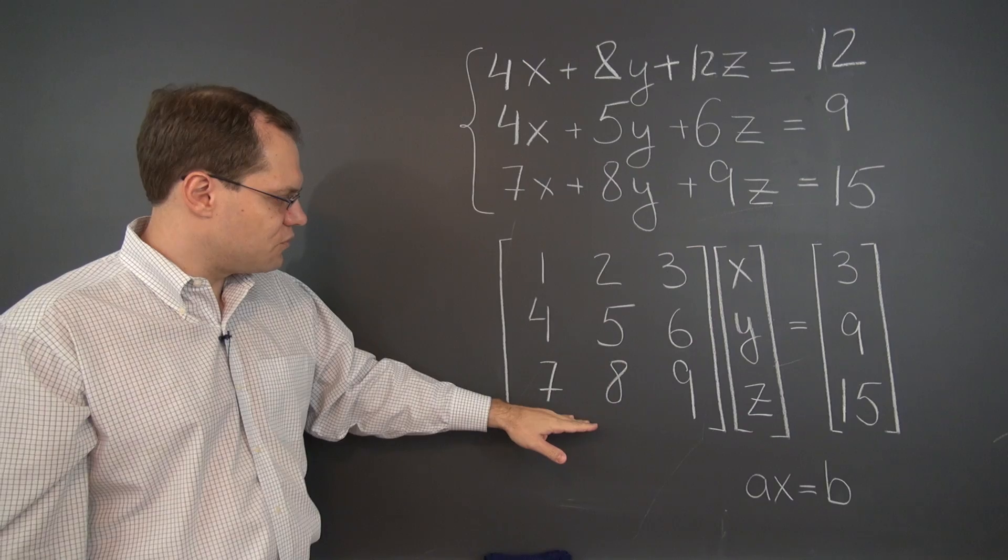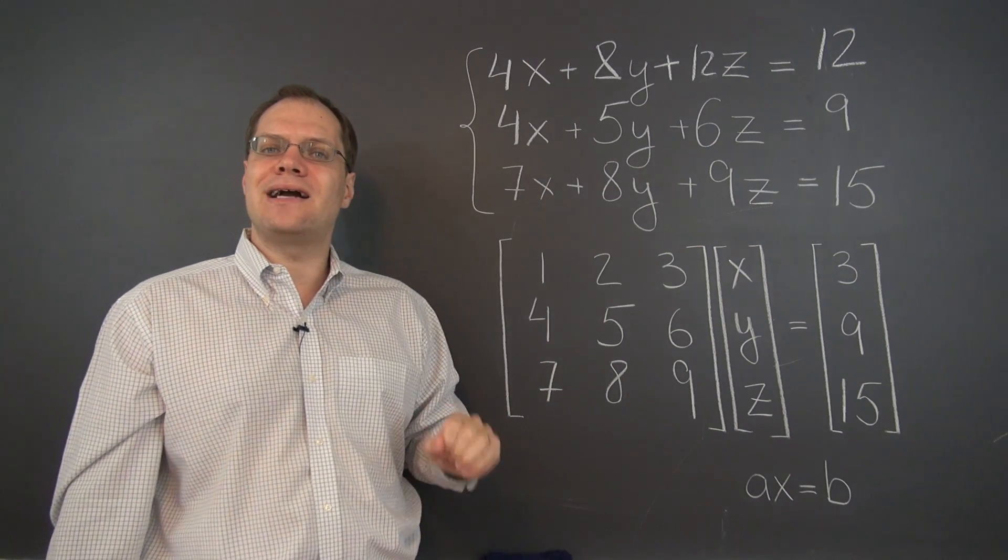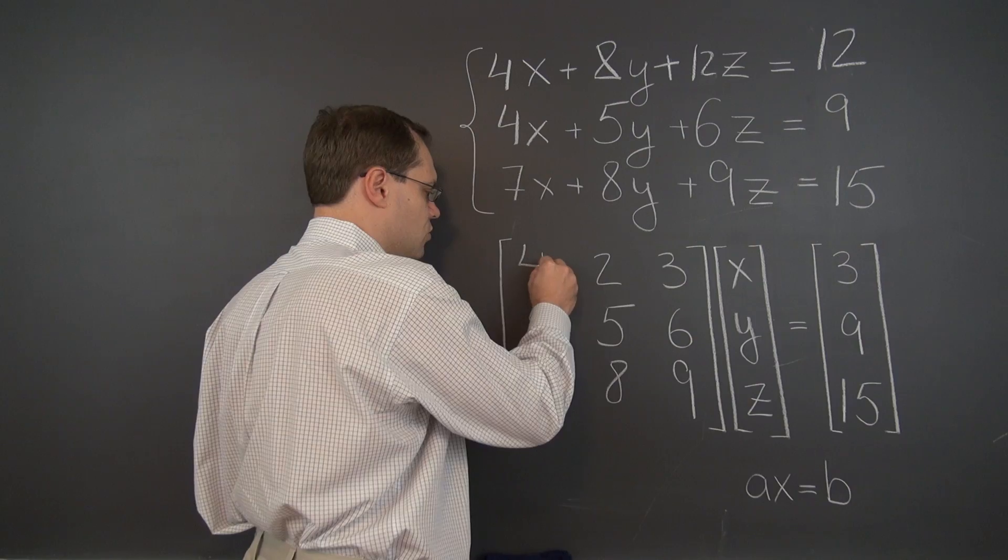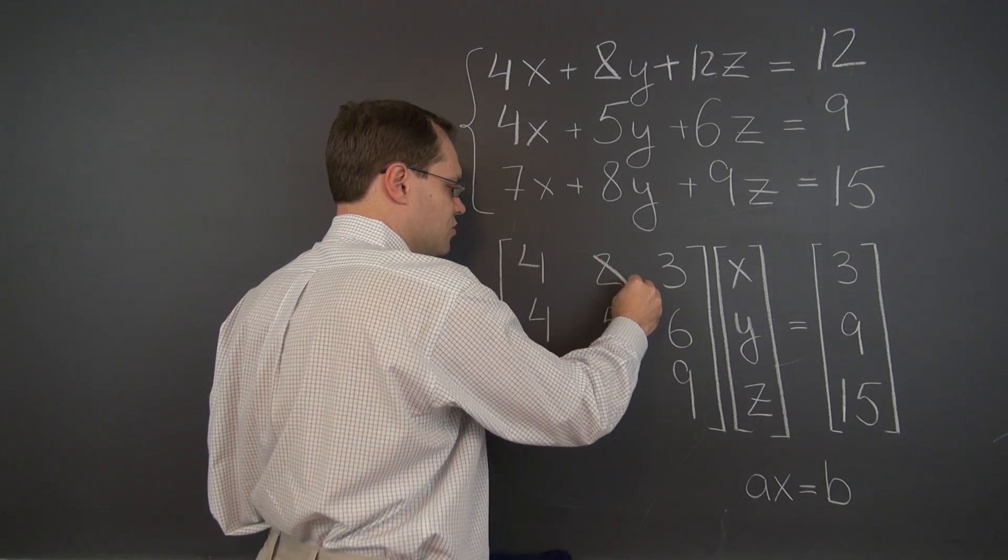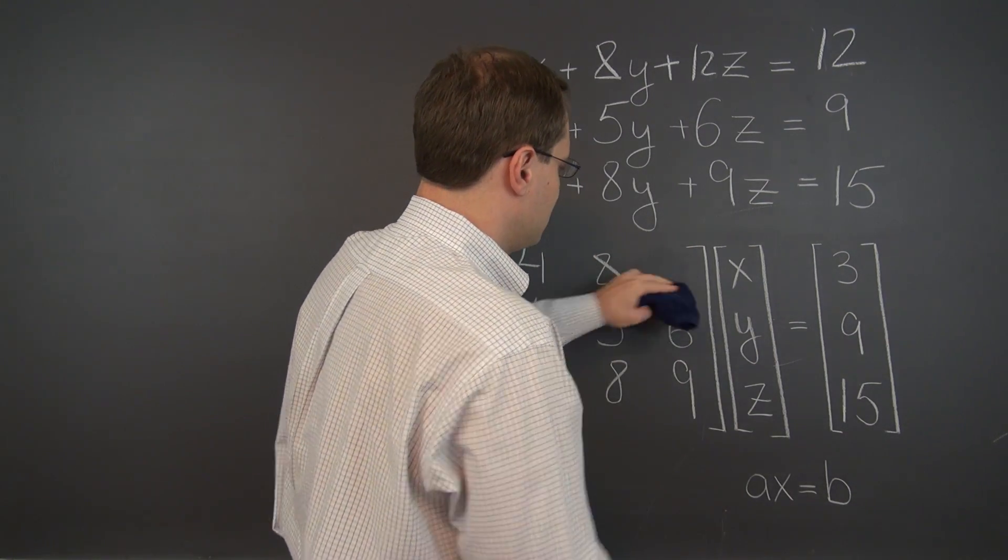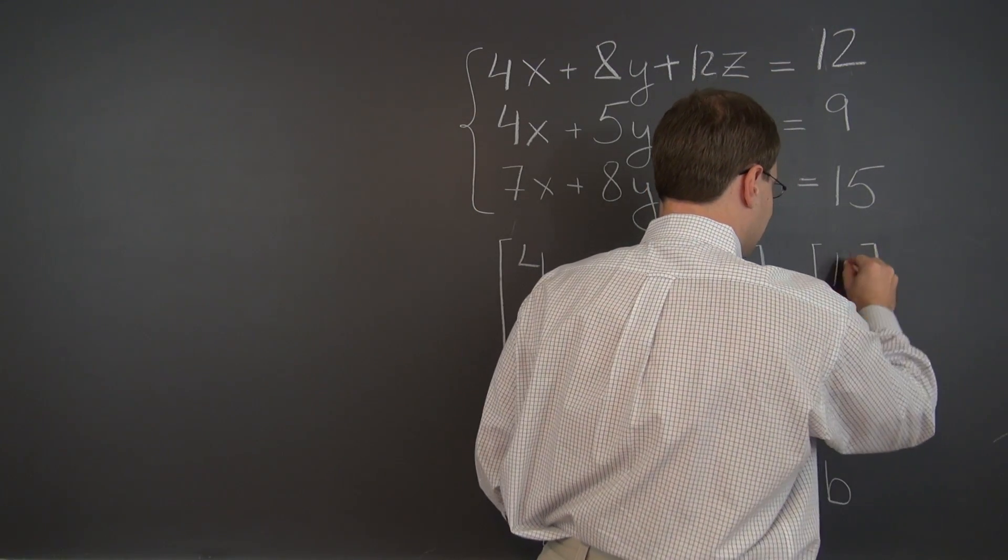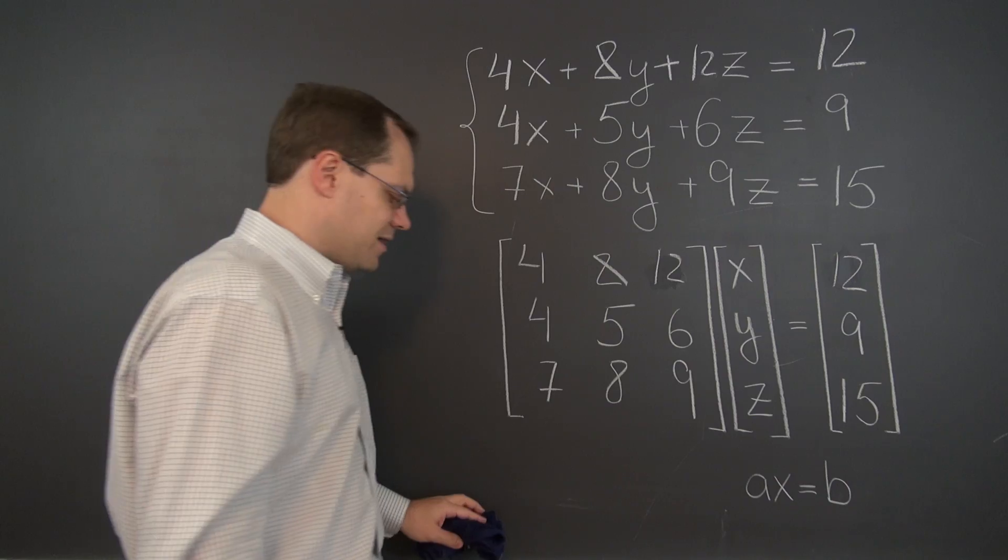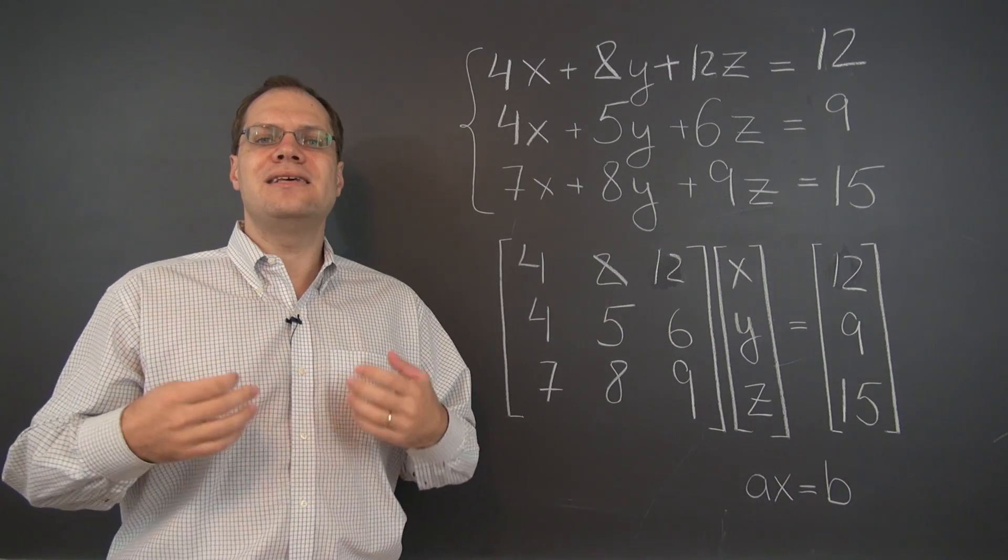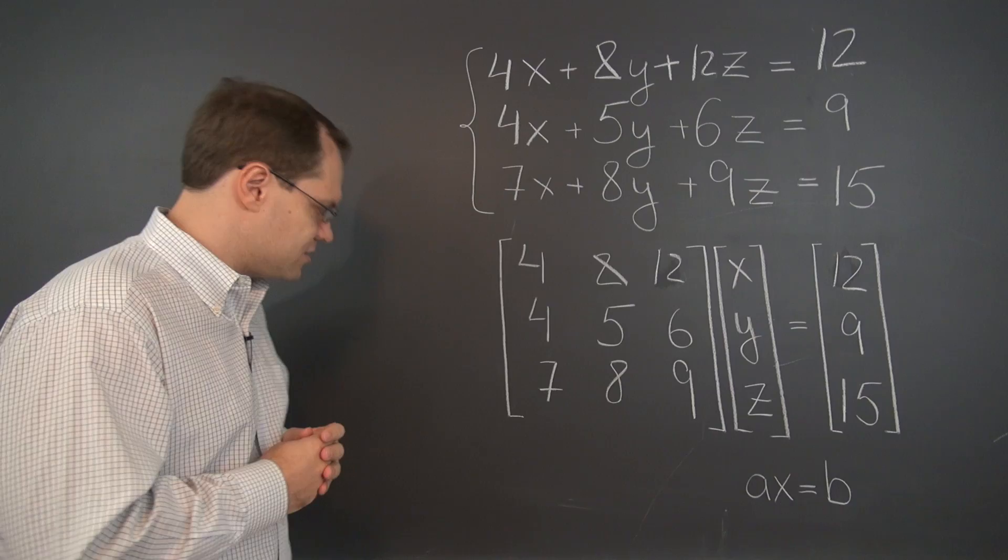And in the matrix form, the corresponding operation is multiplying an entire row by a number: 8, 12, and 12 in this entry. So that's why Gaussian elimination is said to consist of row operations.